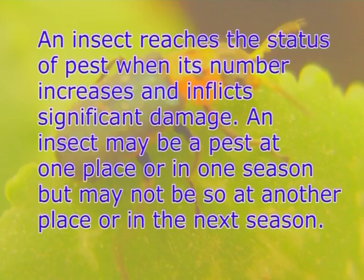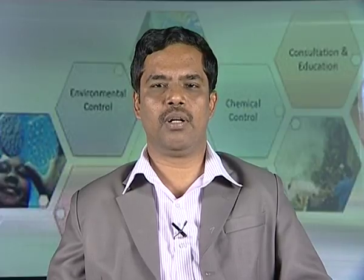An insect reaches the status of pest when its numbers increase and it inflicts significant damage. An insect may be a pest at one place or in one season, but may not be so at another place or in the next season. Therefore, being a pest or not is only a matter of insect numbers.